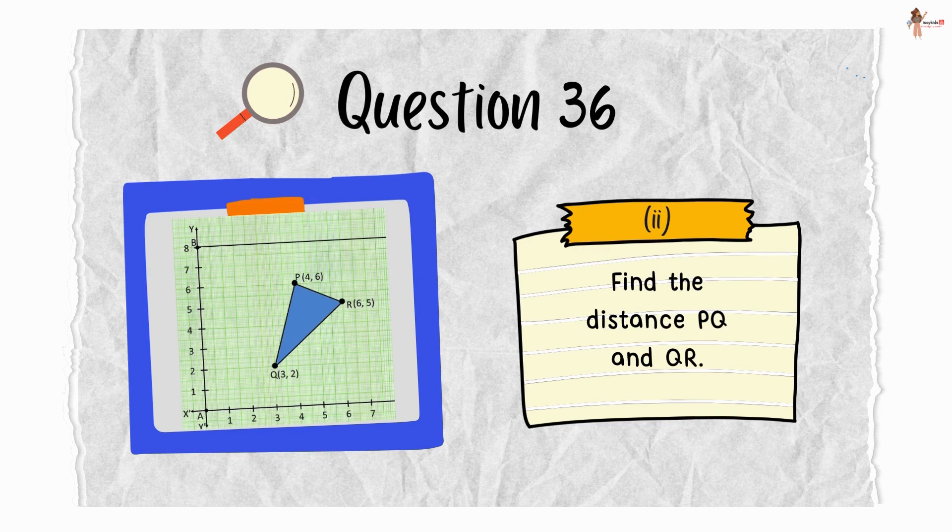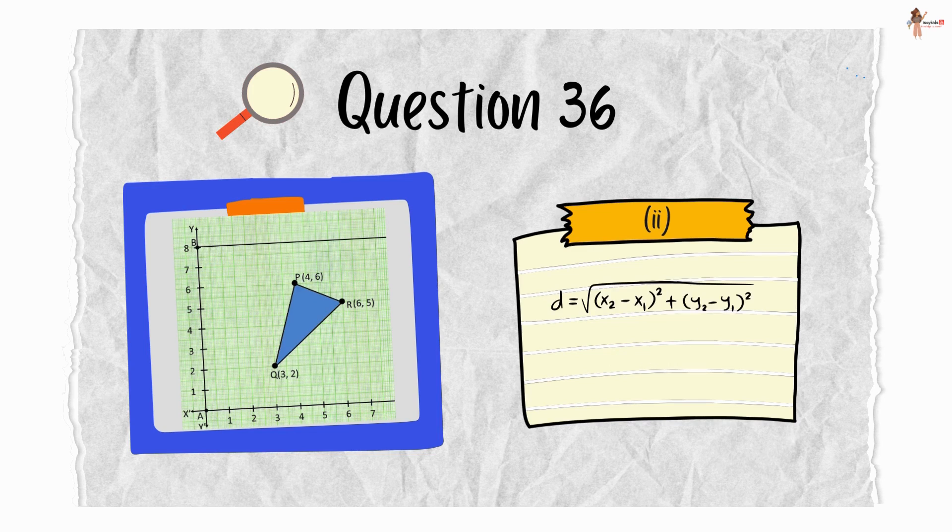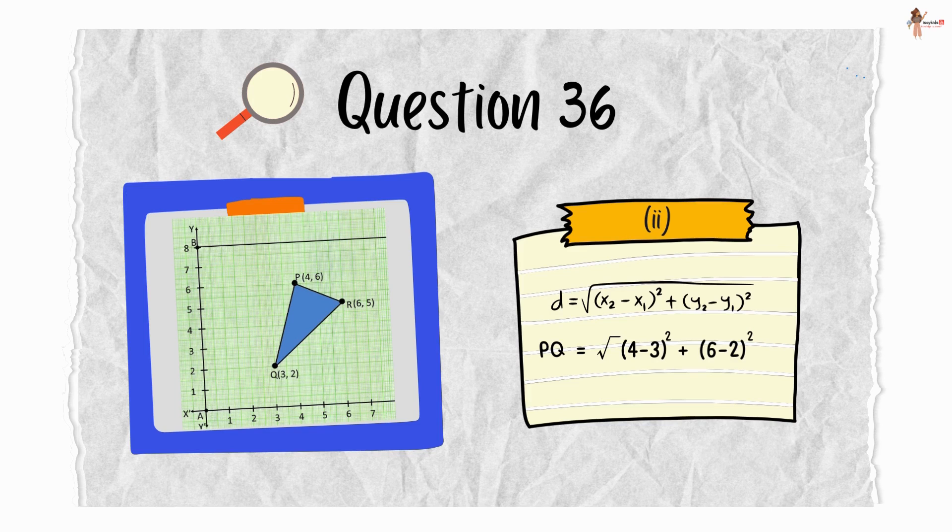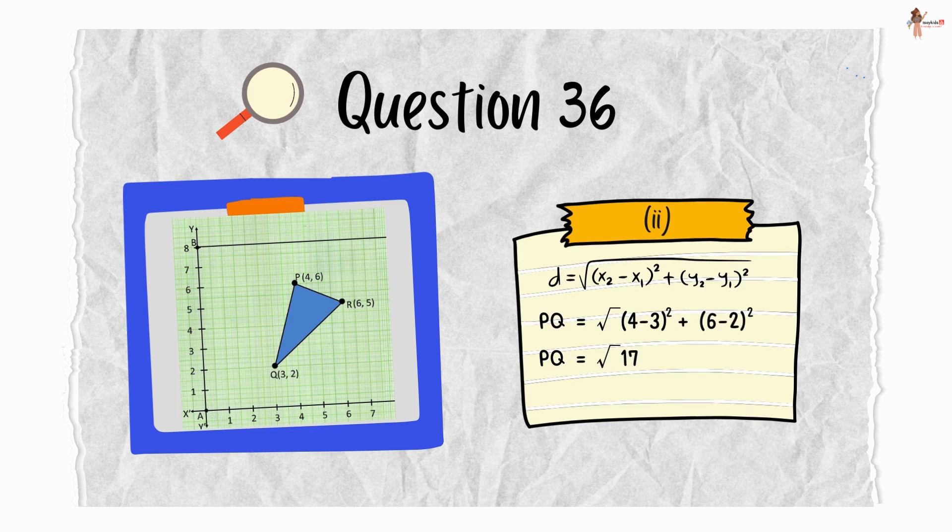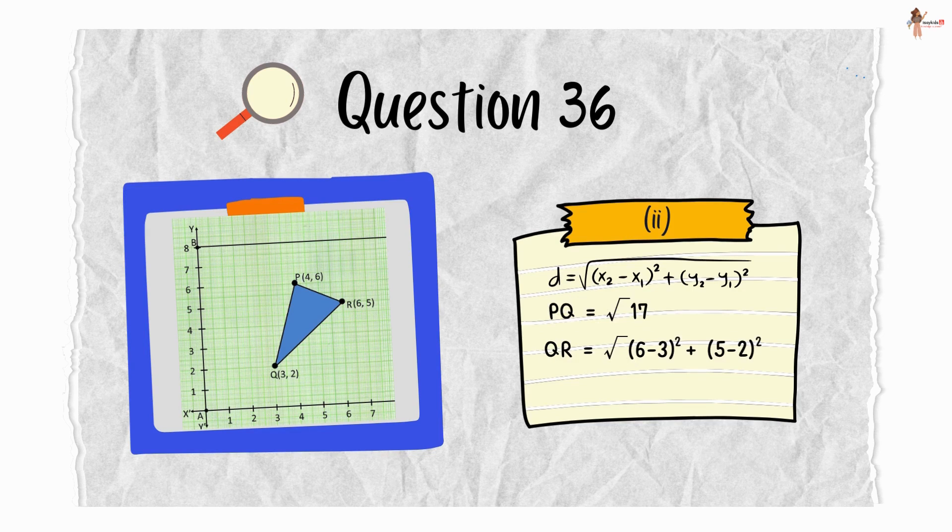Next part is, find the distance PQ and QR. Now distance is given by this formula. Substituting the given values, we get PQ is equal to square root of 17. Similarly, QR is equal to square root of 18.